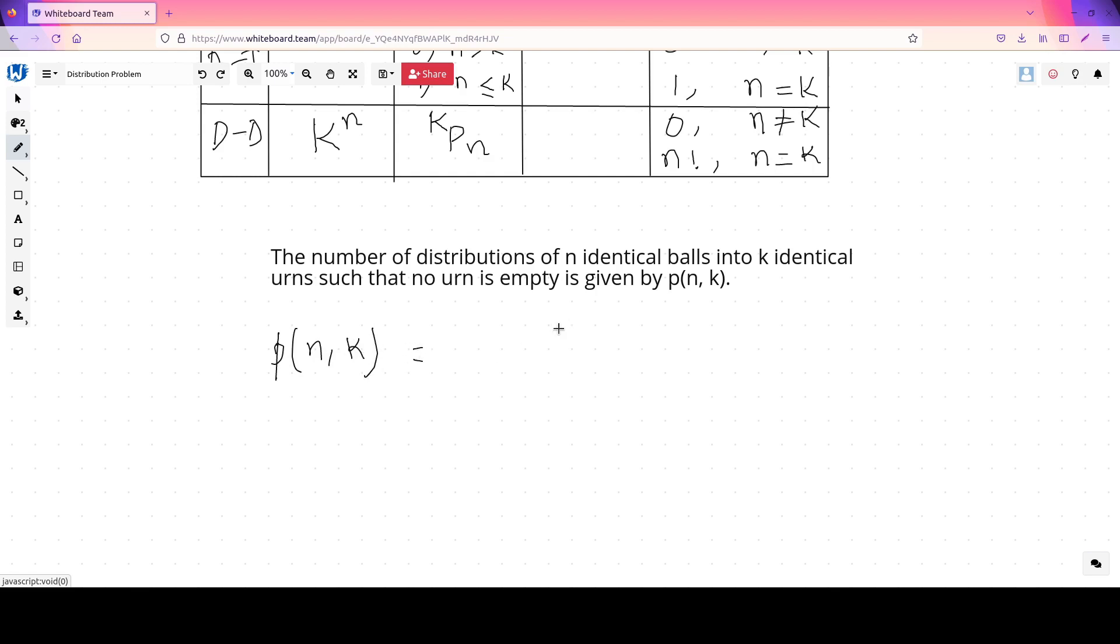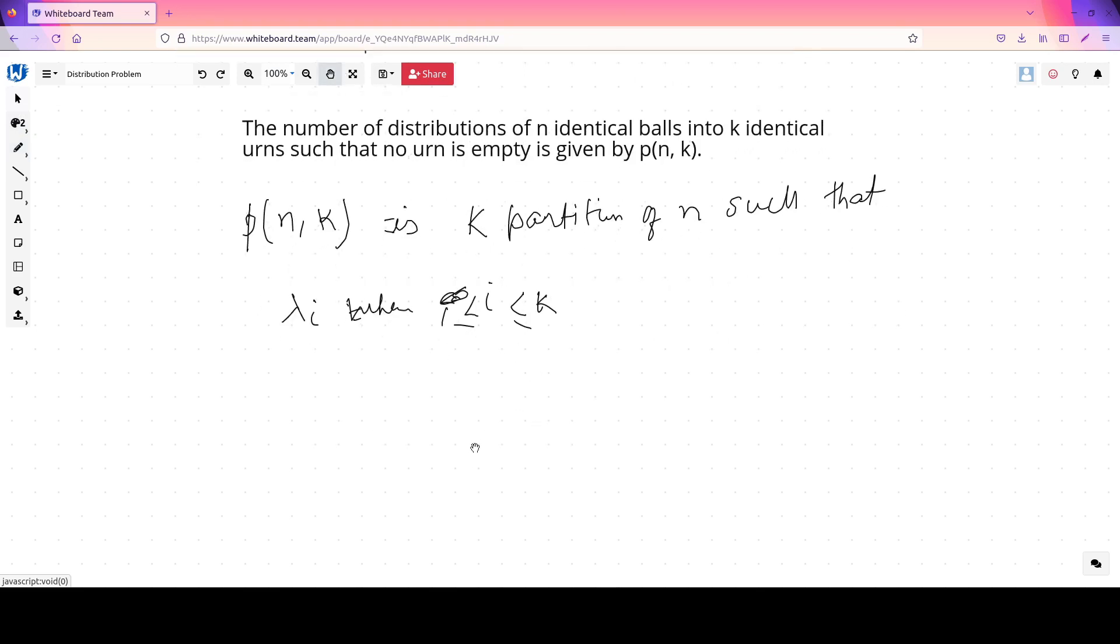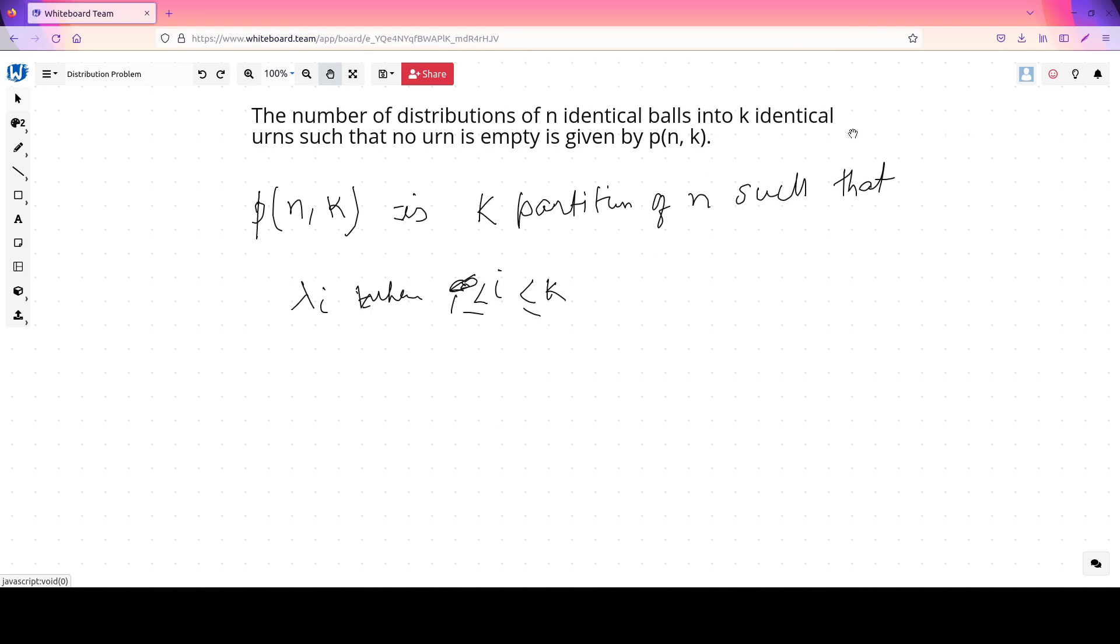So let the partitions be defined as φᵢ where i is equal to 1 and k. So this is nothing but k partition of n where there is no requirement of the order because these are identical urns, whose sum is n.